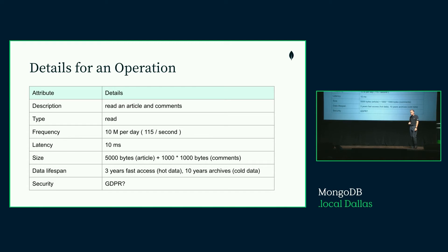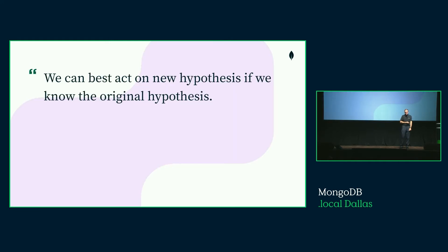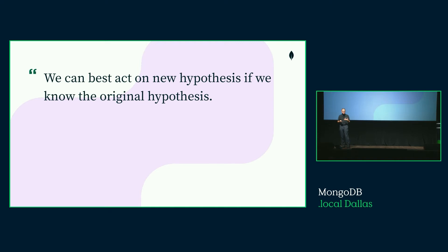Before we model, we need to understand the query in detail. Writing things down is important — it helps you act when something changes. We can best act on a new hypothesis only if we know what the original hypothesis was. My original hypothesis was 10 million reads per day. What if I get 100 million? What's the impact? We're going to get it wrong sometimes, but at least we know what we modeled for.